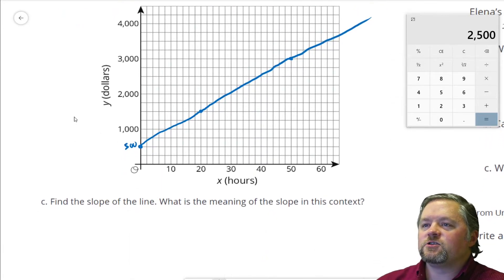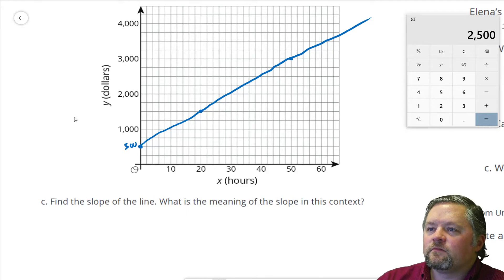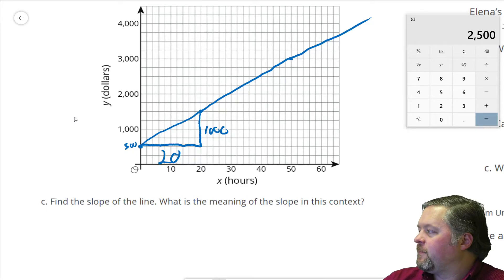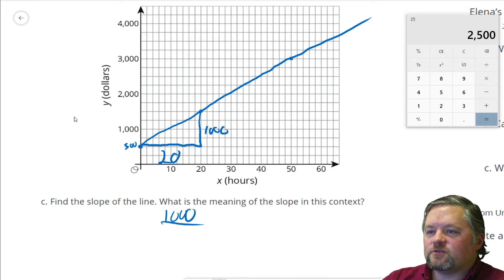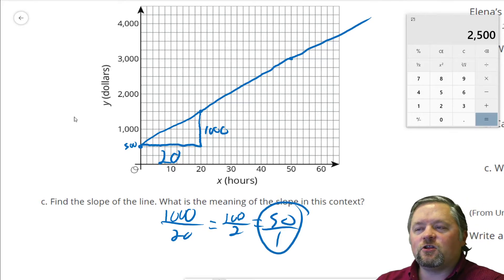Find the slope of the line. Let me draw a nice little triangle. Our run is 20. Our rise is $1,000 from $500 to $1,500. Slope is $1,000 over 20. Simplify that fraction. Knock off a zero from each. That's an easy way to do it. 100 over 2 is $50 over 1. Our slope is $50 over 1.